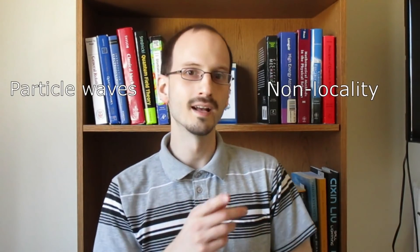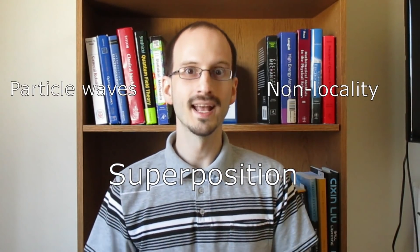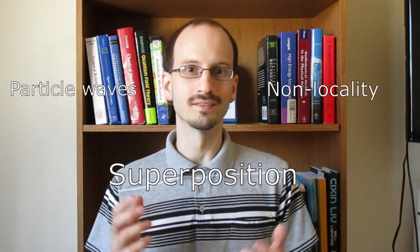In summary, quantum superposition is when a particle has two states that seem to contradict each other at the same time, such as an electron having both spin up and spin down. When a property in superposition is measured, it collapses to one of the possibilities. Now, to pull together everything we've learned—particle waves, non-locality, and superposition—and finally get to the topic of today's video: quantum entanglement.